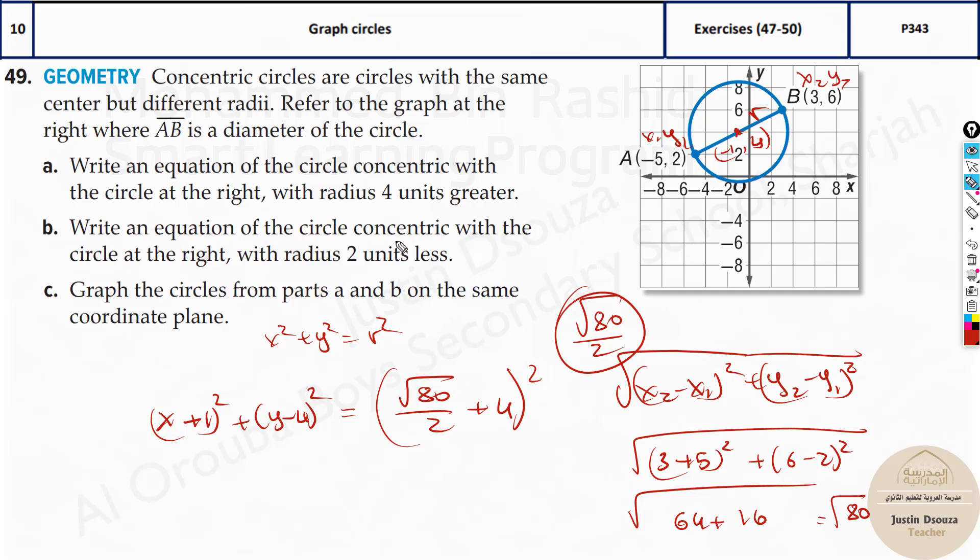Next one, write an equation of the circle concentric with the circle at the right with radius two units less. I'll just write it out over here. x plus one the whole square plus y minus four the whole square equals. Here, all you need to do is root 80 by two minus two the whole square. This is the answer.